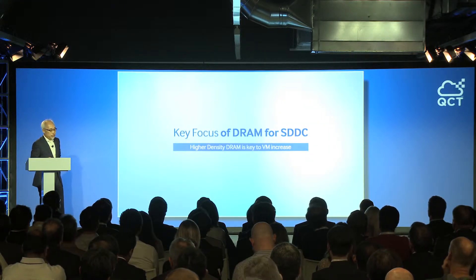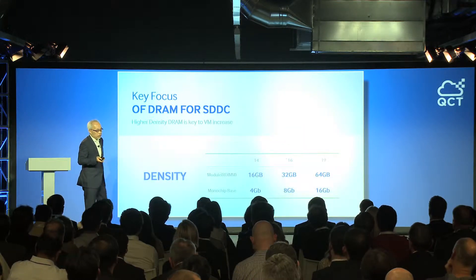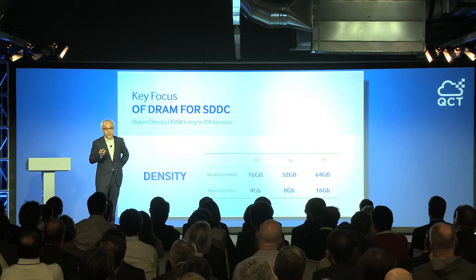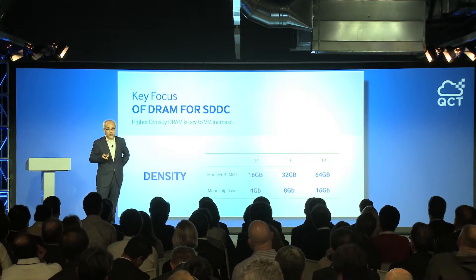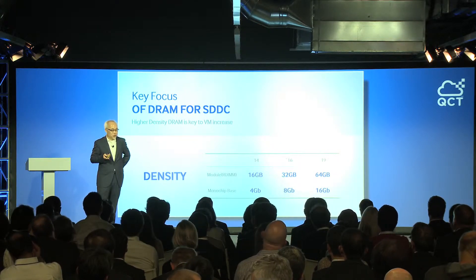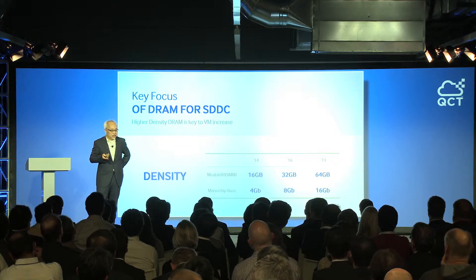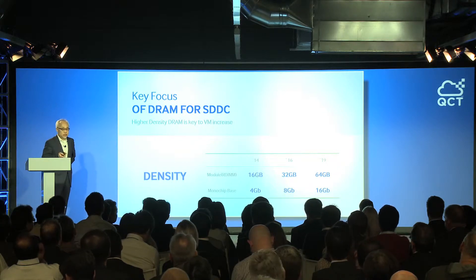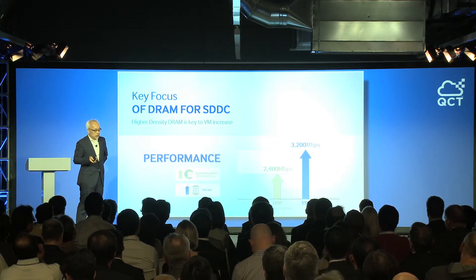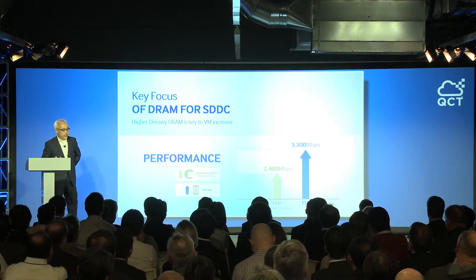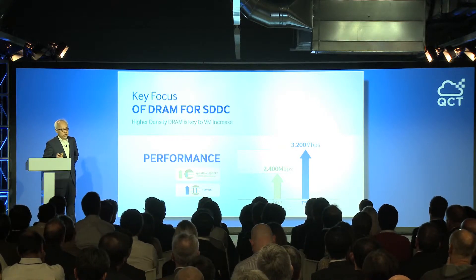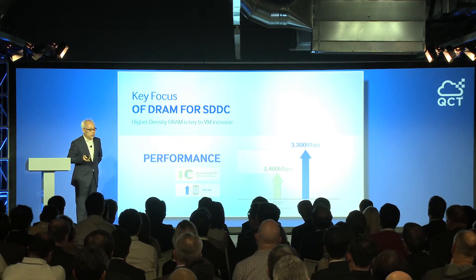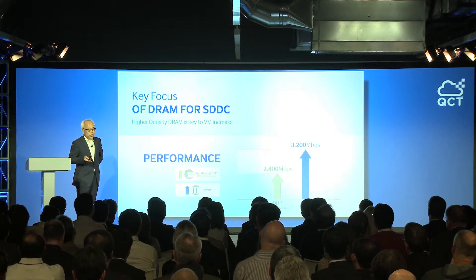Looking at the key focus of DRAM for SDDC: mainstream DRAM density has doubled from 16 to 32 gigabytes this year, mainly due to a huge price drop. It is monolithic-based, and Samsung is going to introduce and prototype a 16 gigabit single chip probably next year. For speed, current DDR4 can achieve up to 2,100 to 2,400 Mbps this year, but Samsung's TSP technology can support up to 3,200 Mbps.